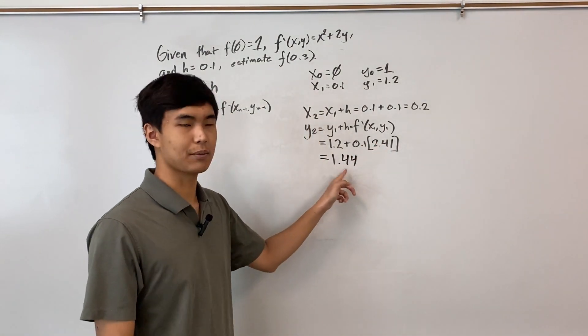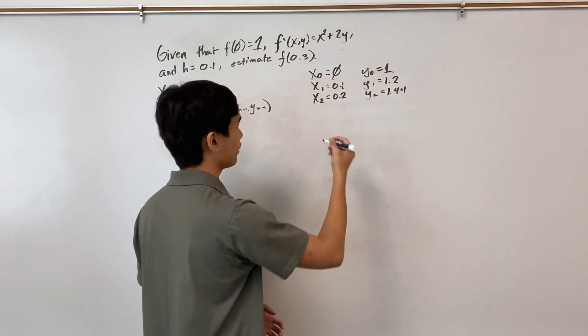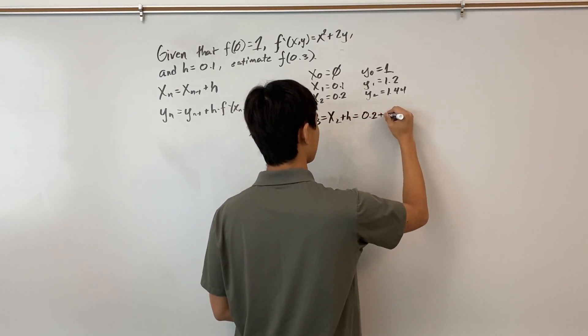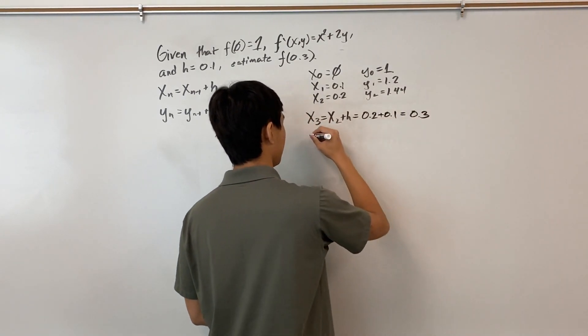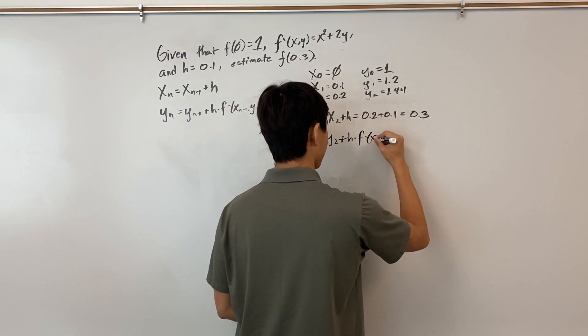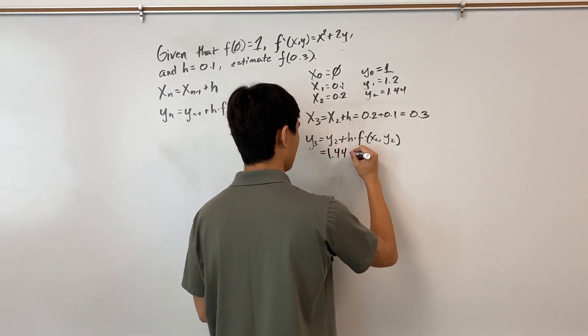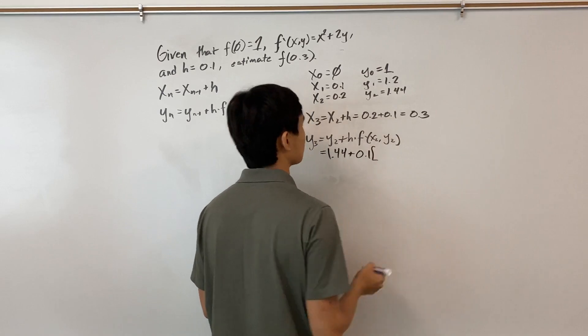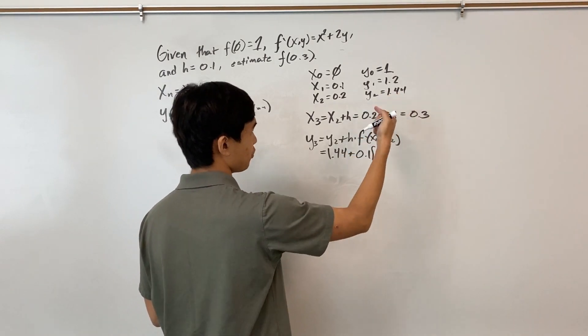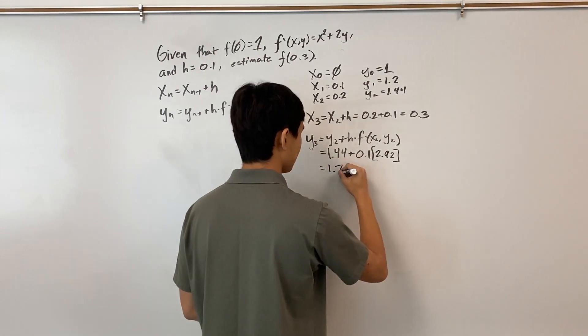I'm just going to truncate at two decimal places, so it looks nicer, and it's not as annoying. And now time to find x₃ and y₃. So our x₃ = x₂ + h, which is 0.2 + 0.1, which is 0.3. And now our y₃ = y₂ + h·f'(x₂, y₂), which is, y₂ is 1.44 plus our step size times, so (0.2)² is 0.04, plus 2 times 1.44 is 2.88. So our derivative here is 2.92. The sum is 1.73.